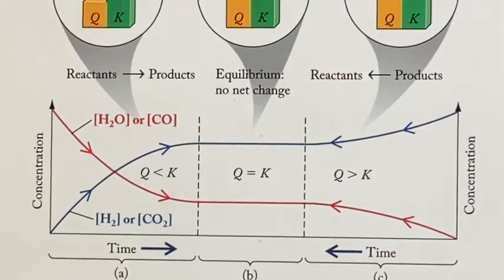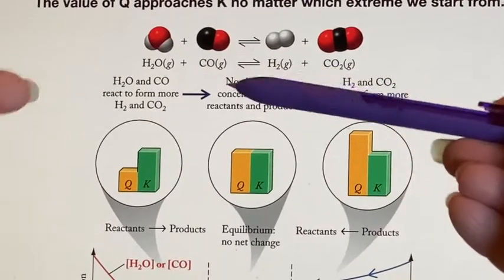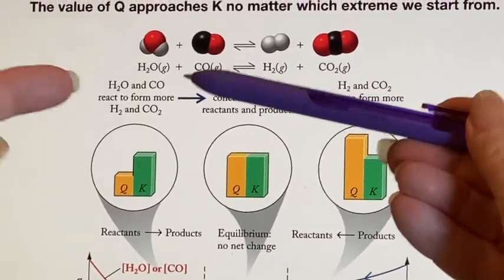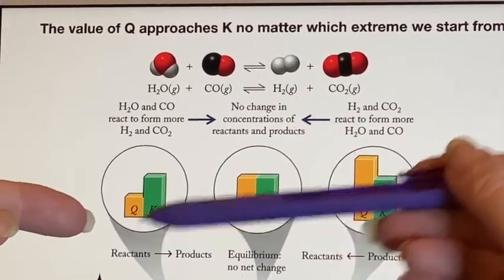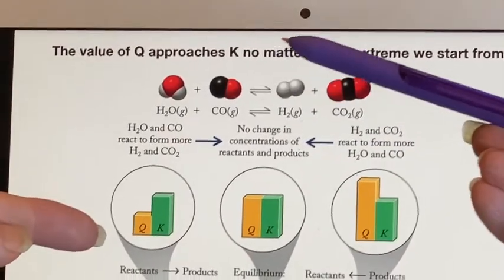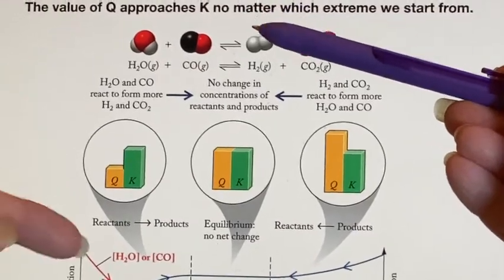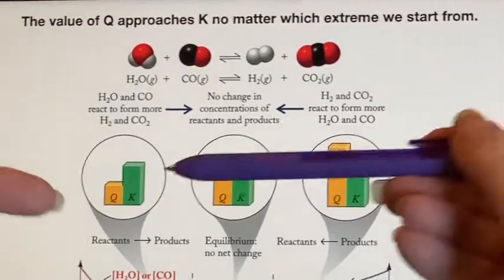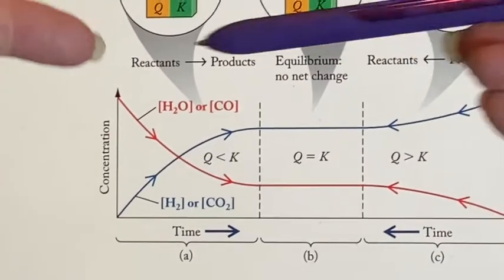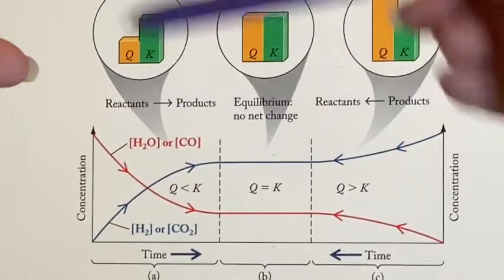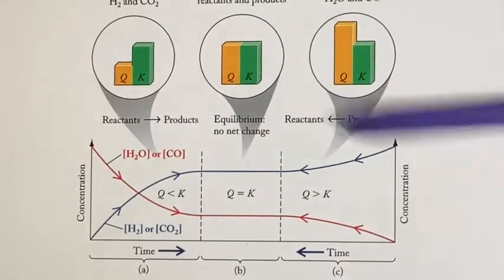But that's not always true. Maybe we started by dumping just water and carbon monoxide into the reaction vessel. If we did that, then automatically Q would be less than K. Why? Because we form Q by taking products over reactants, and the products would be at zero — so Q would be zero. It would start at zero and begin forming a number getting closer and closer to K.